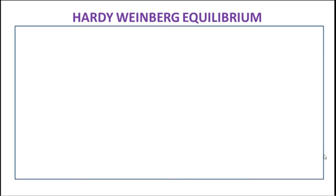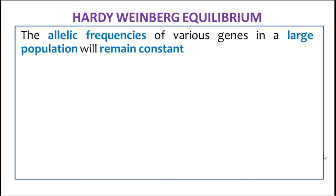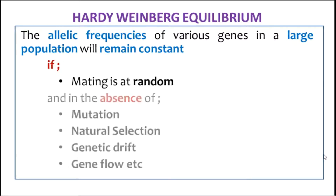Now let us analyze the definition of Hardy-Weinberg Equilibrium. According to this concept, the allelic frequencies of various genes in a large population will remain constant if mating is at random and in the absence of mutation, natural selection, genetic drift, gene flow, etc.